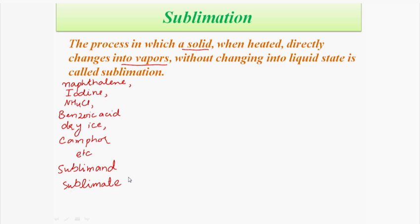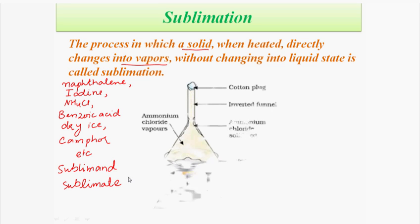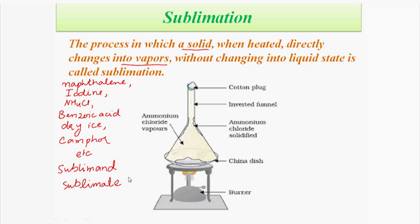Now let's discuss the process of sublimation. Consider this figure in which we are subliming ammonium chloride. The given sample of the impure substance is taken on a china dish. The china dish is placed over a tripod stand with a burner below it in order to heat our sample.